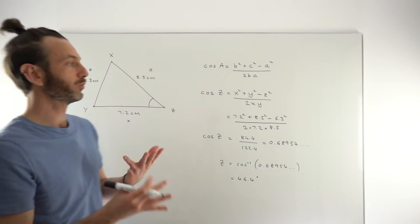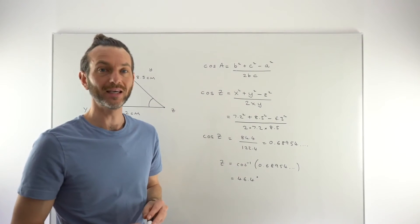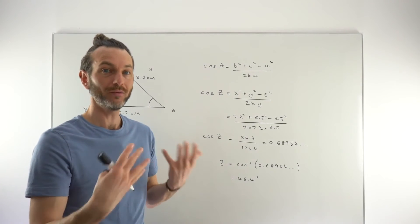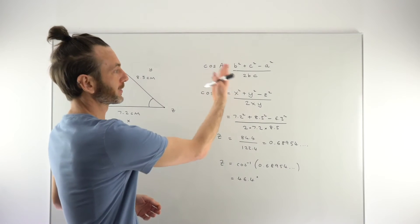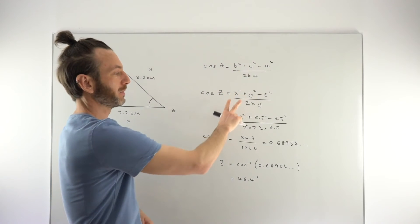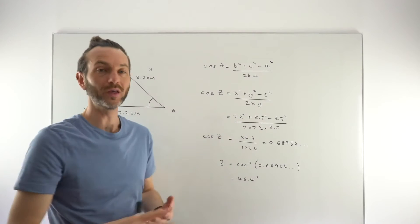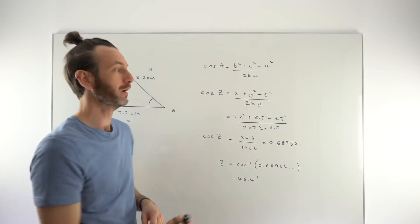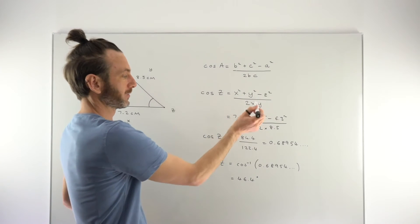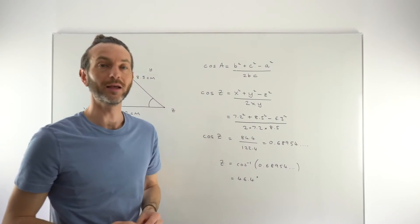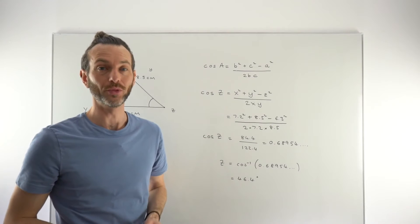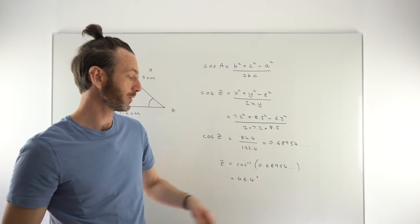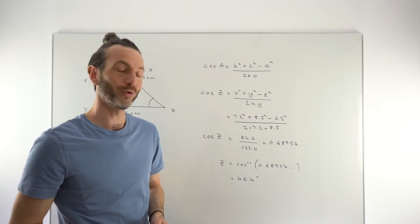Sine and cosine rule questions are not easy, but the key is getting really focused on which rule to use. If you pick the wrong rule, it'll be obvious after a line or two that you don't have enough information. Once you pick the correct one, populate the formula carefully and watch the numeracy. The answer is 46.4° — remember your degrees because it's an angle.